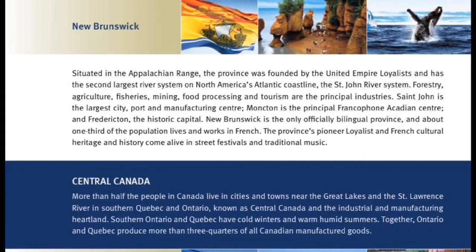New Brunswick. Situated in the Appalachian Range, the province was founded by the United Empire Loyalists and has the second-largest river system on North America's Atlantic coastline, the St. John River System. Forestry, agriculture, fisheries, mining, food processing and tourism are the principal industries.